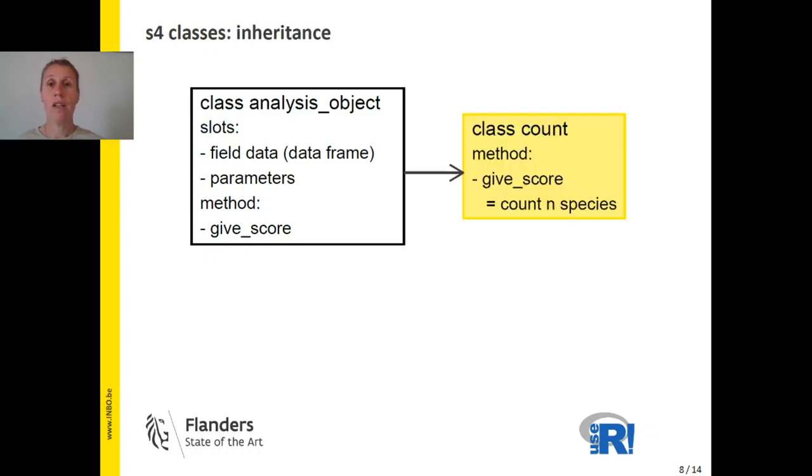So we can define a class presented here in yellow, which inherits from the class analysis object. This means that all slots and methods that are defined in analysis object are taken over in this yellow class. Of course, the yellow class is inspired on our yellow example from the beginning.